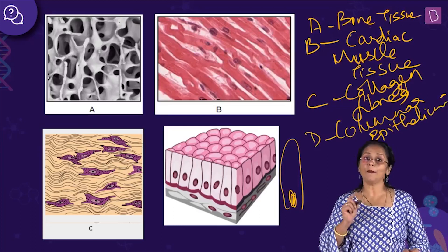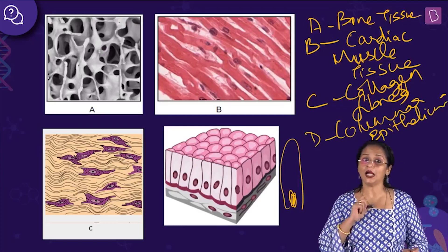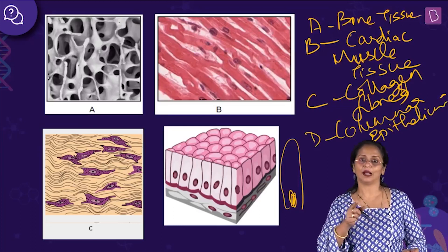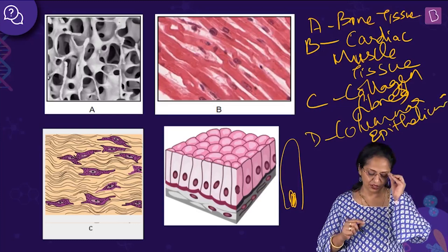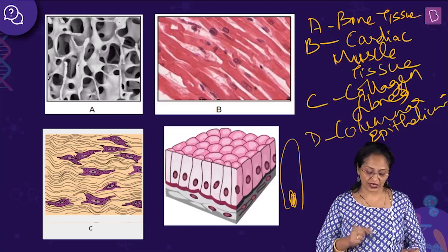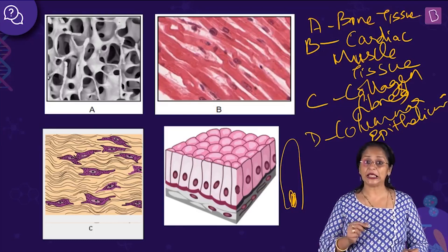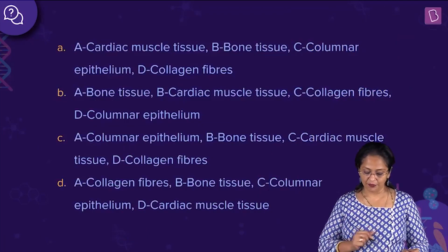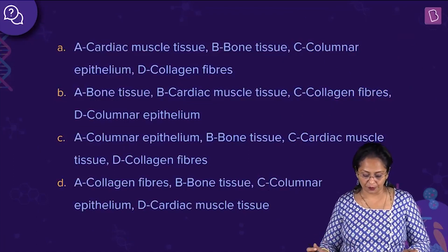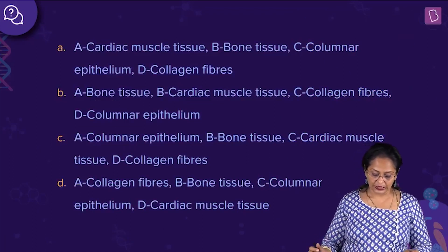So: A is bone, B is cardiac muscle tissue, C is collagen fibers, and D is columnar epithelium. Let us look at the options. Is it A — cardiac? No, this is wrong.